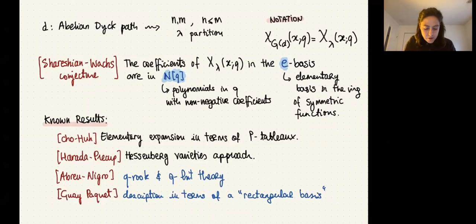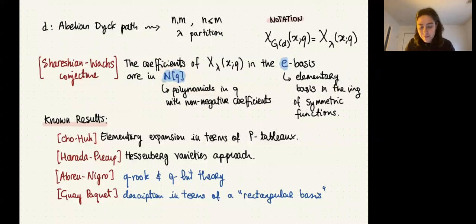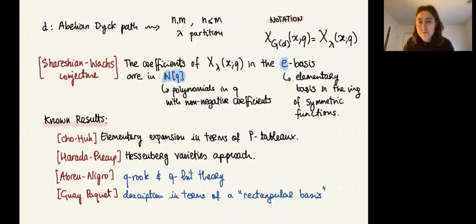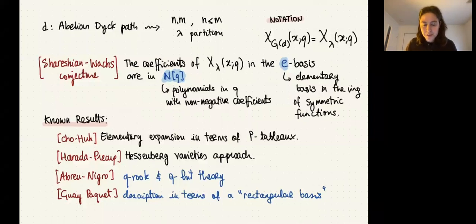What Shareshian and Wachs conjectured is that if you look at the chromatic symmetric function q-analog and expand it in the elementary symmetric function basis e, then the coefficients are in ℕ[q] — that is, polynomials in q with non-negative coefficients. The e-basis is the strongest positivity statement in the ring of symmetric functions. Having positive coefficients is interesting combinatorially because it suggests a counting problem, and algebraically because they could be counting dimensions of spaces associated to varieties.